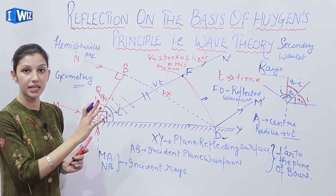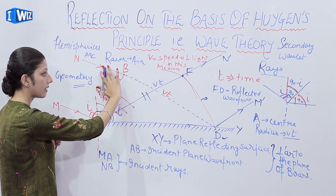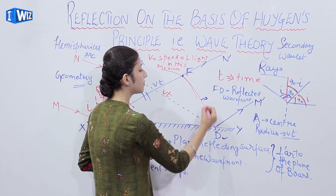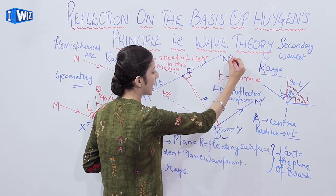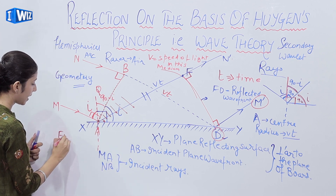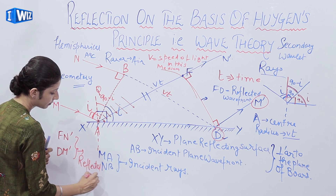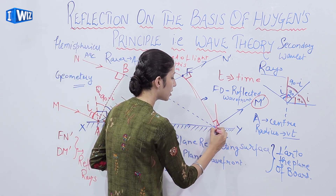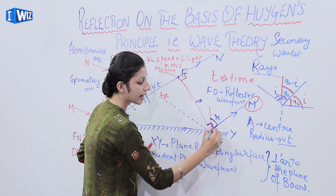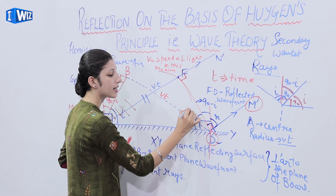Since the entire medium is the same — for example, air — we have incident wavefront, reflected wavefront, and everything in the same rarer medium, so this is reflection. Similarly, the lines perpendicular to the reflected wavefront FD, that is FN' and DM', act as the reflected rays. Drawing a normal at the point of reflection, the angle with the normal is r. The total angle between the reflected ray and the wavefront FD is 90°, giving us 90 − r, and by geometry this remaining angle equals r.